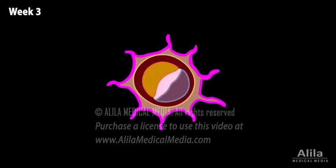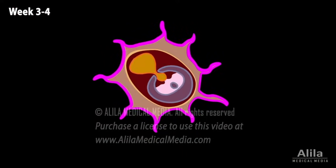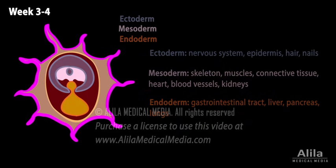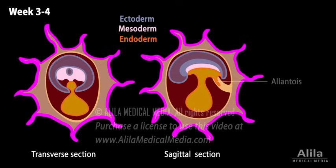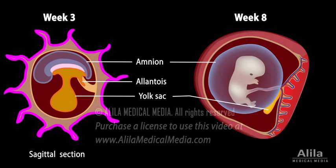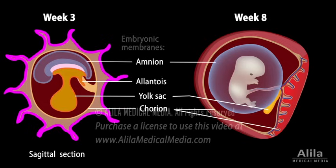Each of the three germ layers differentiates to become different organs and tissues. All organ systems are present in their primitive form by the end of the embryonic period, but most are not yet functional or only partly functional. The yolk sac gives rise to the allantois, a primitive urinary bladder and part of the umbilical cord. The amnion grows to surround the embryo by week four, filled with amniotic fluid which protects the embryo from trauma and temperature fluctuations, allows the fetus to move freely, and prevents adhesion of body parts. The yolk sac, amnion, allantois, and chorion are the four embryonic membranes.